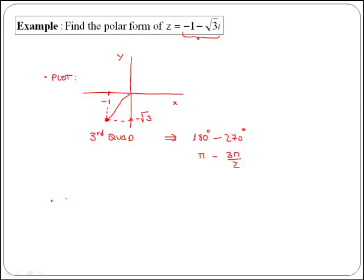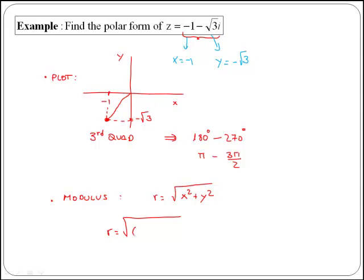The first thing we are going to get is, as before, the modulus. Remember, r is equal to the square root of x squared plus y squared. In this case, x is equal to minus 1, and y is equal to minus the square root of 3. So we have r is equal to the square root of minus 1 squared plus minus the square root of 3 squared, which gives the square root of 1 plus 3, as minus by minus will be plus, and the square root of 3 squared gives you only 3, which is the square root of 4, which is equal to 2.